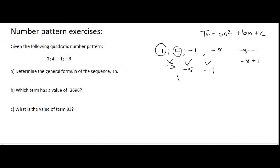Going to the next row, minus 5 minus minus 3 is minus 2. You can do all of this on the calculator if you need to. Minus 7 minus minus 5 gives you minus 2. And so we can see that our second difference is, in fact, constant.